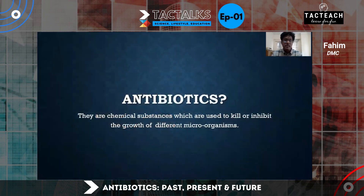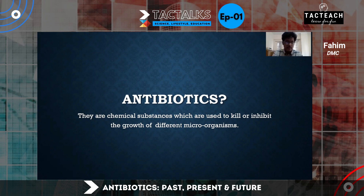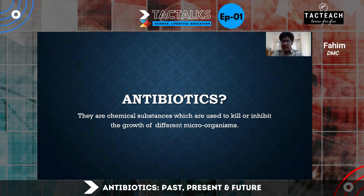So what are antibiotics? Antibiotics are chemical substances which are used to kill or inhibit the growth of different microorganisms. Antibiotics are not usually made by microorganisms themselves; they are often found in soil bacteria or fungi. In fact, the very first antibiotic ever discovered — penicillin — was derived from the fungus Penicillium, way back in 1928.